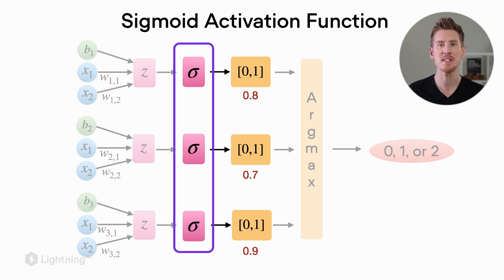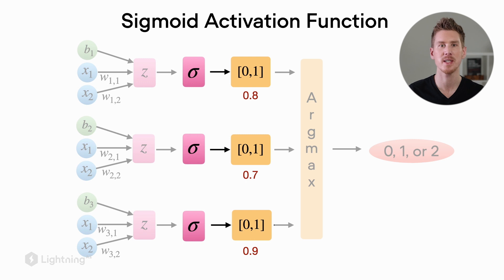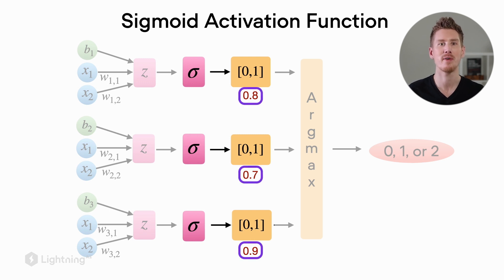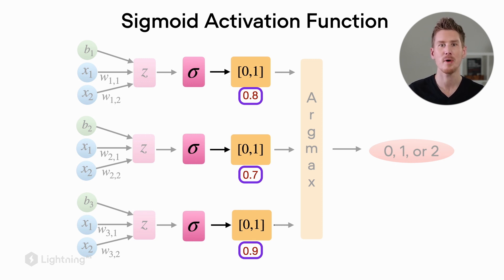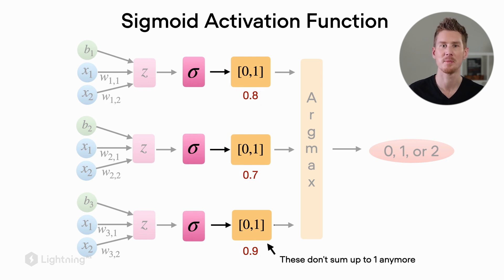As a consequence, the values returned by the sigmoid activation for each one will be a value between zero and one. So what you might notice is that we have probabilities of 0.8, 0.7, and 0.9, and those don't sum up to one.